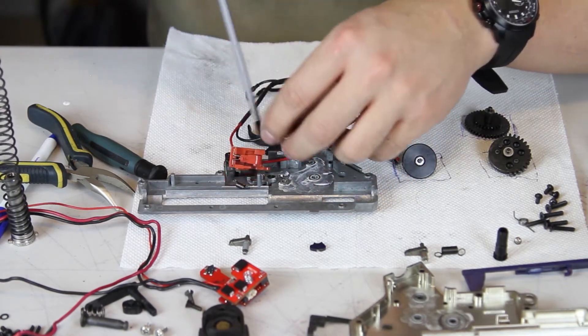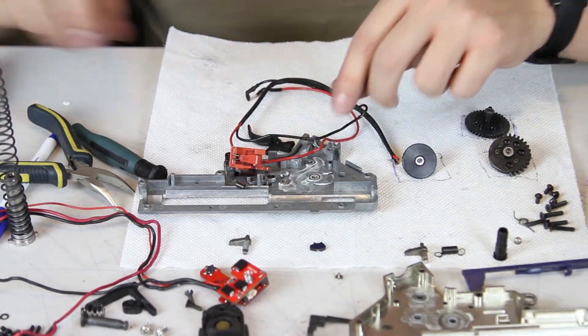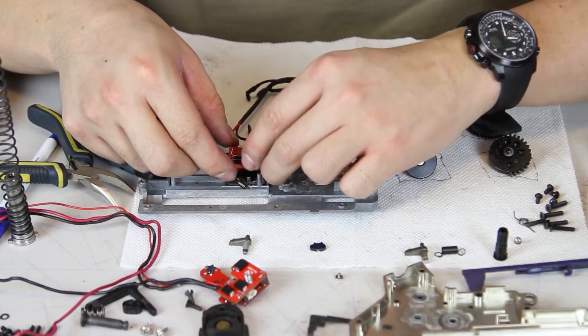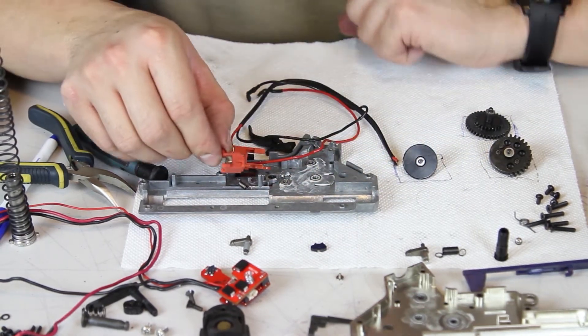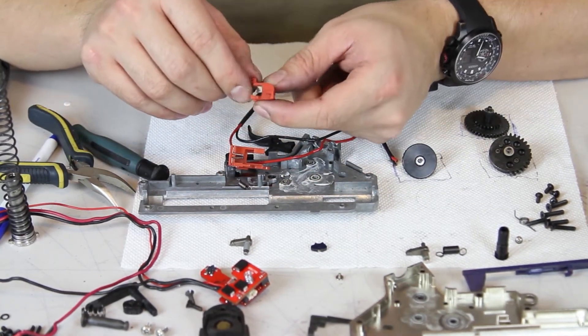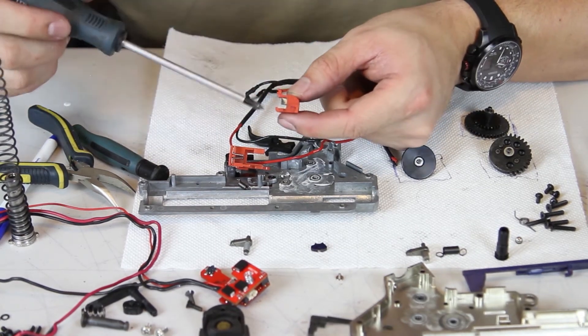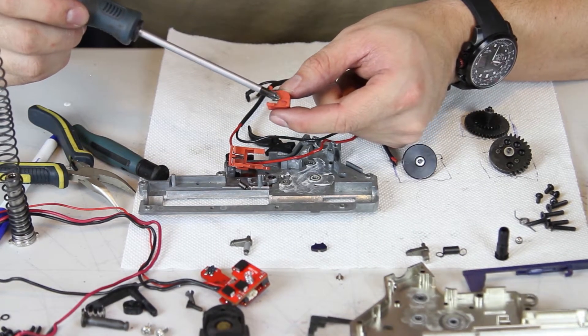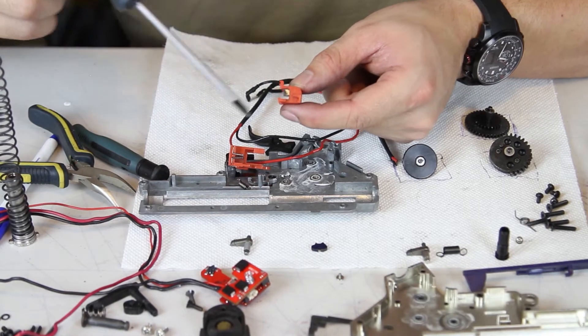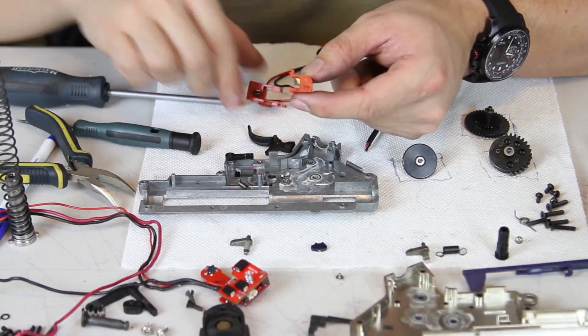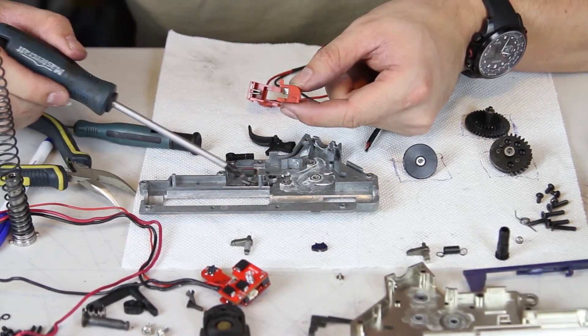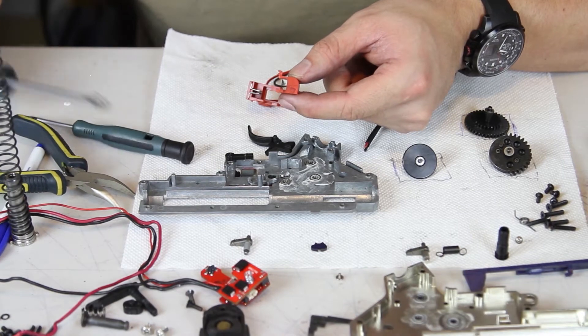When you pull your trigger, the trigger physically moves the trigger unit shuttle forward, creating an electrical contact, cycling your gearbox, and shooting a BB. The cutoff lever, which moves up and down via the selector plate, will either force the trigger shuttle to reset after every gearbox cycle, which is semi-auto, allow the trigger shuttle to stay in contact, which is full-auto, or physically prevent it from moving, which is safe.